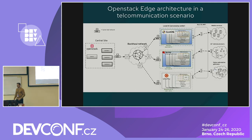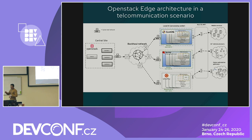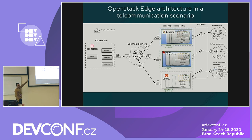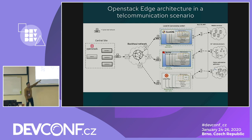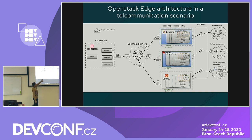Edge computing is being used by telecommunication companies for hosting their applications across multiple countries and regions globally. At the central site I deploy my OpenStack cloud with a director node, controller node, compute and storage nodes. The three edge nodes — which can run any kind of application or operating system like Red Hat or Ubuntu — are connected via an MPLS backhaul network with physical routers and switches. Any kind of application can be hosted on your edge nodes.